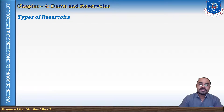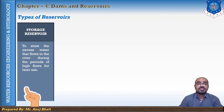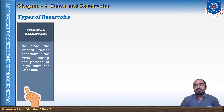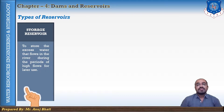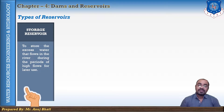There are mainly four different types of reservoir. The first one is the storage reservoir. A storage reservoir is formed by constructing a dam across the river. Storage reservoirs are constructed to store water in the rainy season and to release it later when the river flow is low. They are primarily used for supply of water for irrigation, development of electricity, and domestic and industrial purposes.